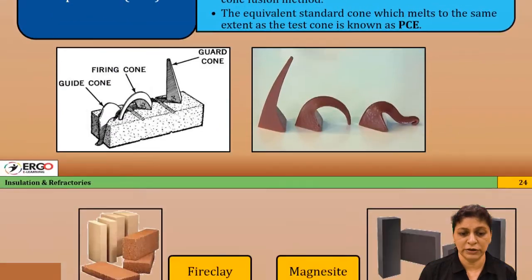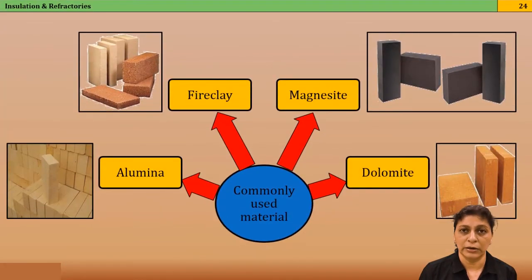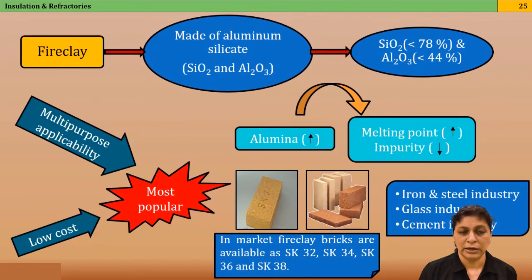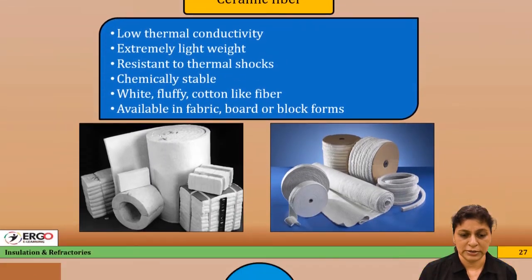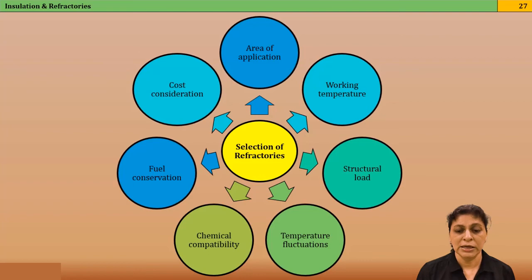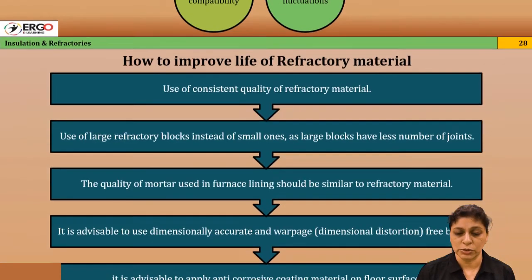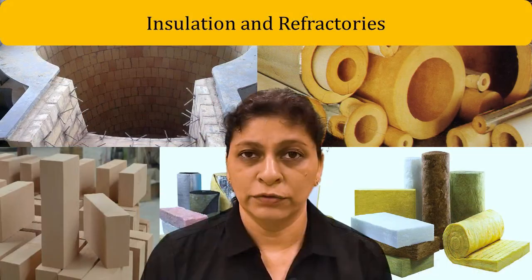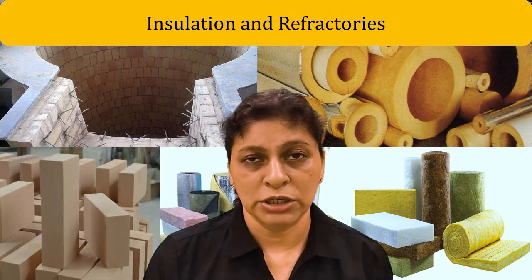For high temperature applications, the material used is called refractory. Different refractories and their properties, forms, and classifications are discussed, along with property evaluation methods. Ceramic fibers and many other refractories are explained in detail in the second part of the video series, followed by how to select the right refractory.